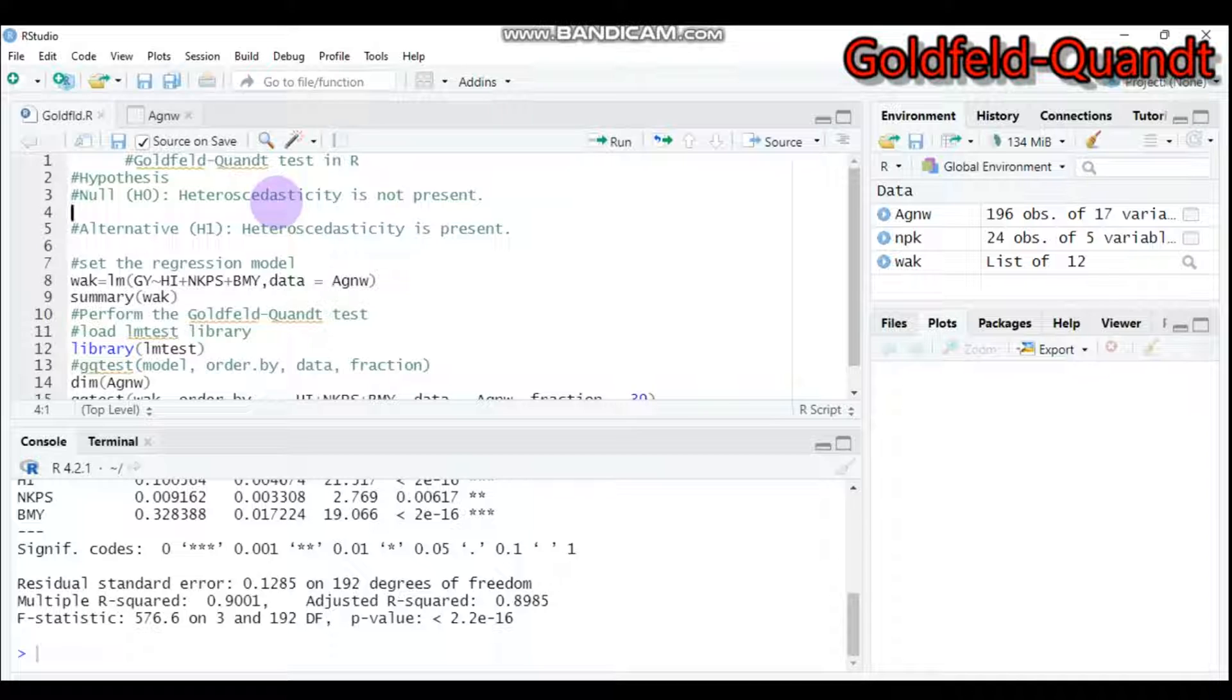If the p-value is greater than 0.05, we may fail to reject the null hypothesis, so there is no heteroscedasticity. But if the p-value is less than 0.05, there is a presence of heteroscedasticity, and we will have sufficient evidence to reject the null hypothesis.